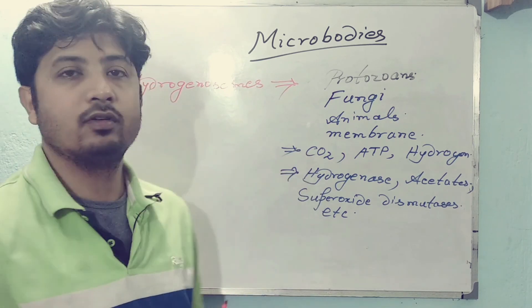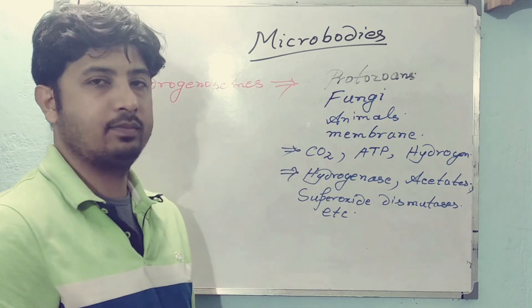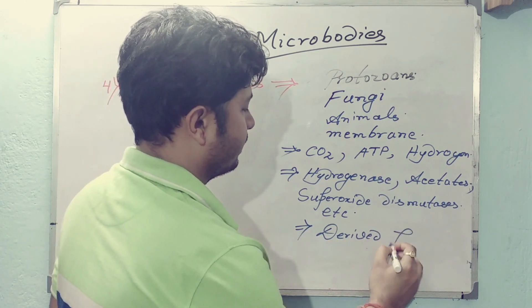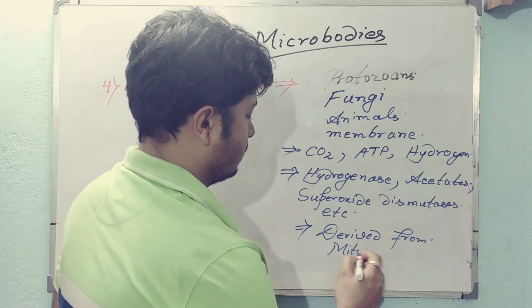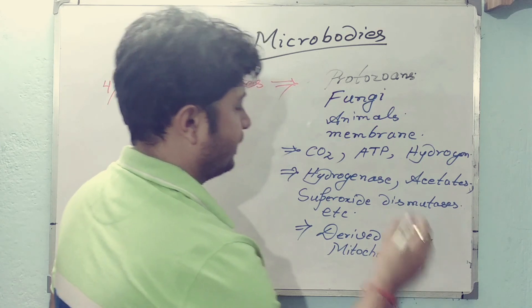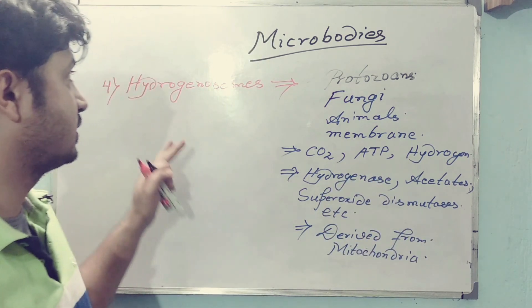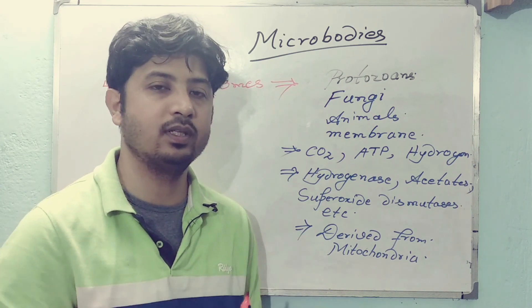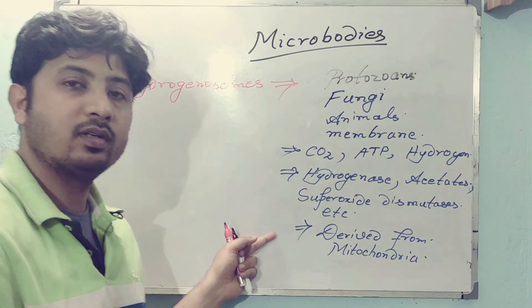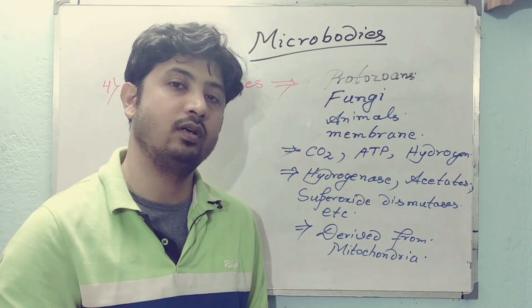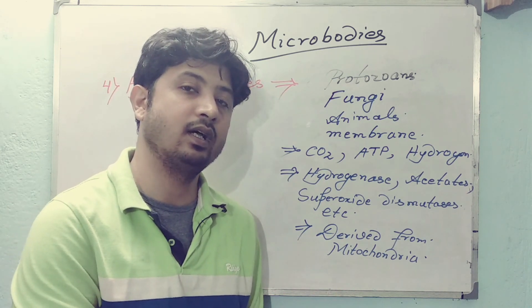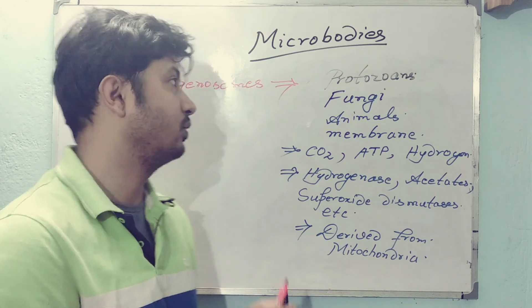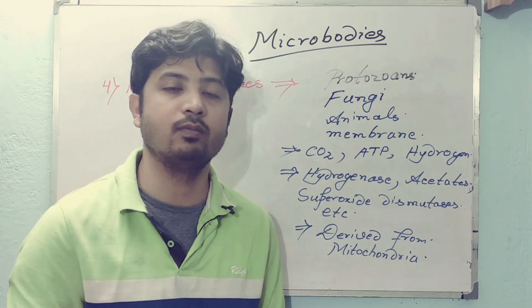It is widely accepted that hydrogenosomes are derived from mitochondria. Studies on hydrogenosomes are helping researchers carry a lineage — a link — between mitochondria and earlier ancestors, because mitochondria are known to be an ancient prokaryote, or derived from a prokaryote, residing inside eukaryotic cells. So hydrogenosomes represent a very important link between eukaryotes and prokaryotes, and most researchers are actively working on this.